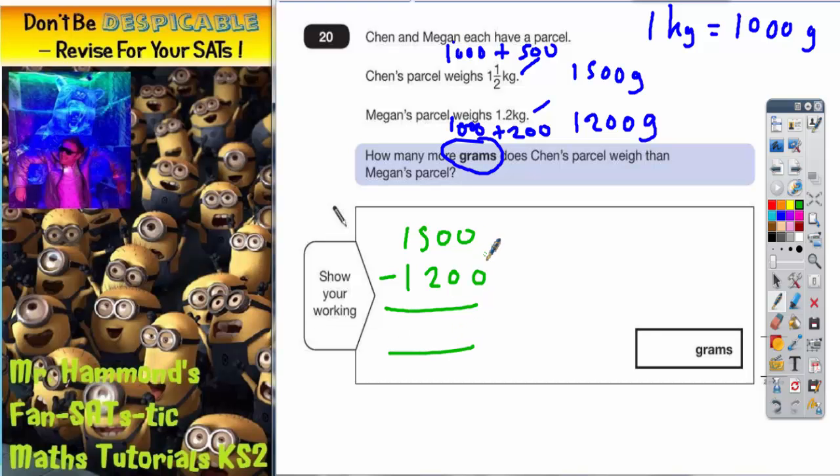So, nothing take away nothing is nothing. Nothing take away nothing is nothing again. 5 take away 2 is 3. 1 take away 1 is nothing. So it's going to be 300 grams. That's your final answer.